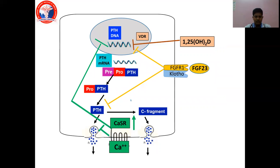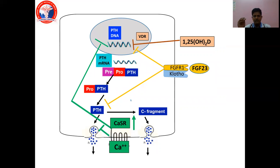As shown in the diagram, when calcium attaches to the calcium sensing receptor, it gives a negative feedback to the DNA in the chief cell so that parathyroid hormone transcription does not occur. But when calcium is low, this negative feedback cannot happen, leading to transcription of parathyroid hormone mRNA.